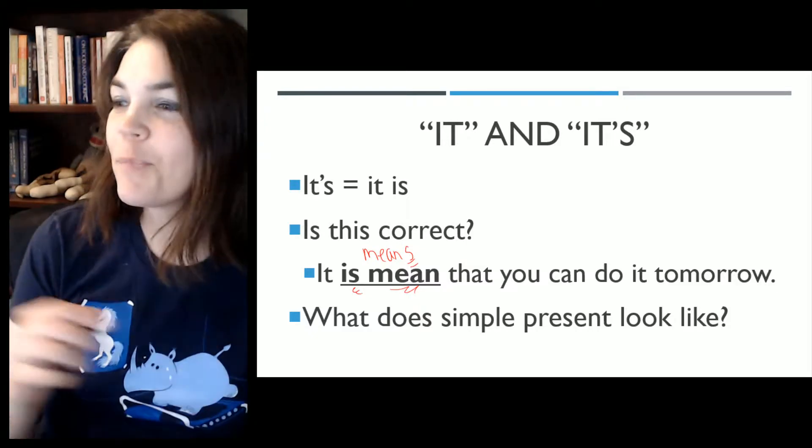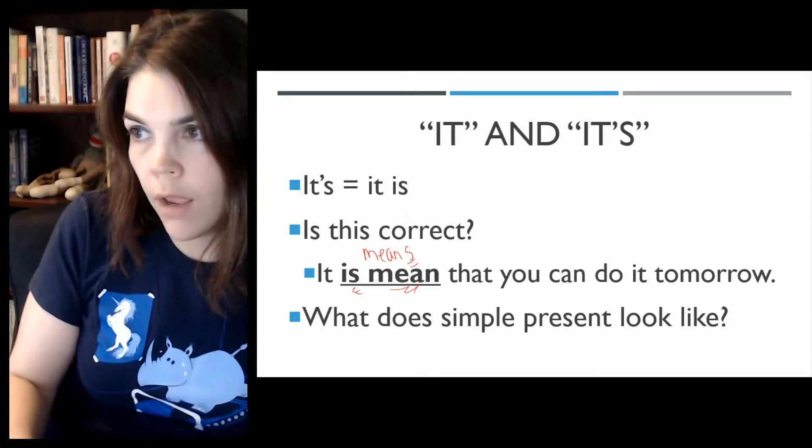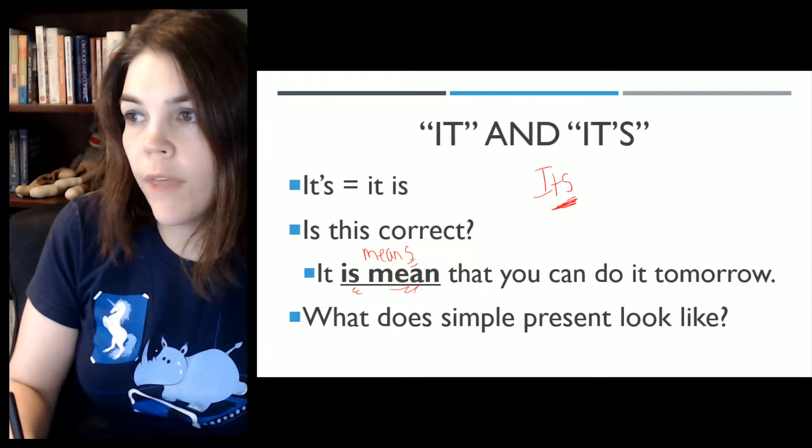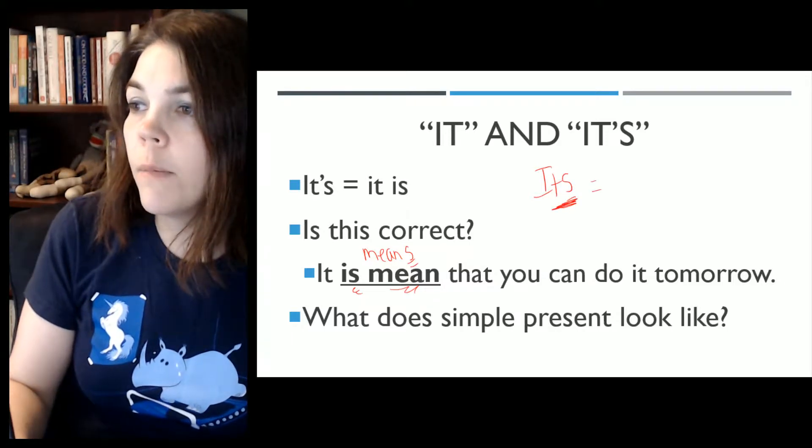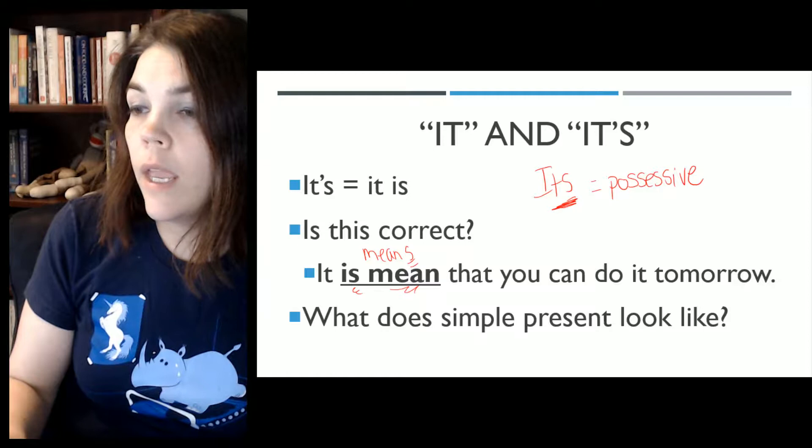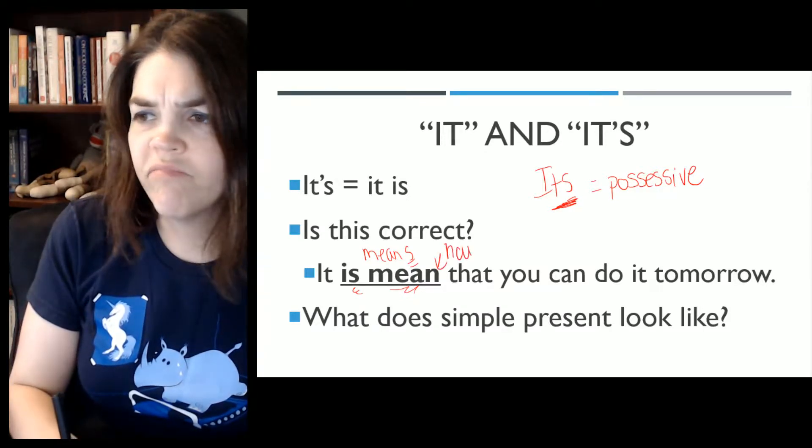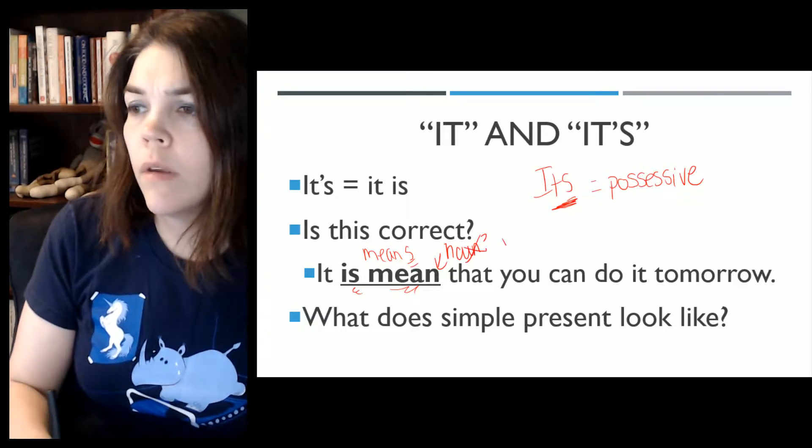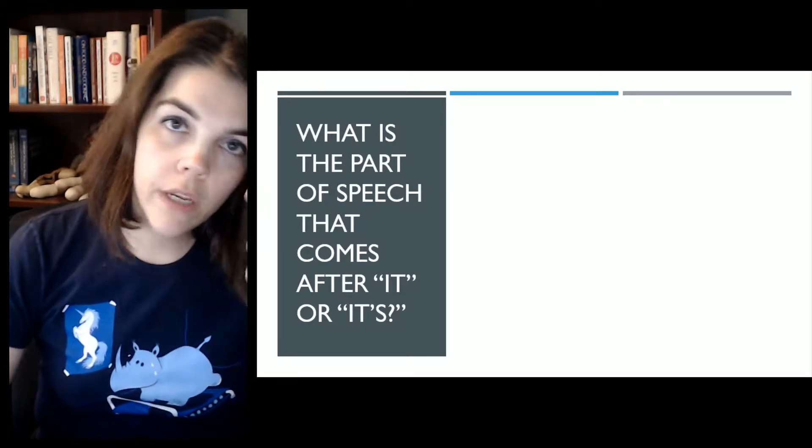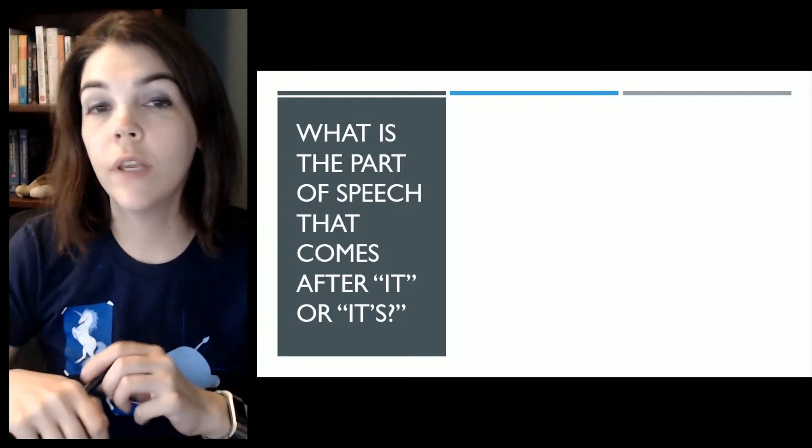So we know that it's mean is not correct. I'm also going to add on here that we also know that it can't be its without the apostrophe because that is possessive. And as you can see here, this is not a noun. This is a verb. So that also doesn't work.